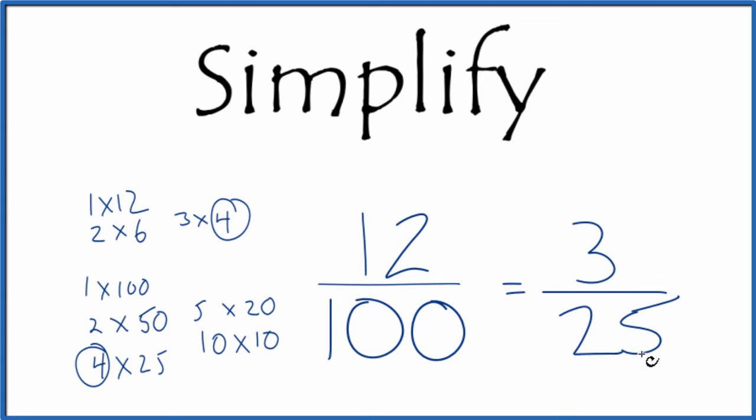We can't reduce this any further. We've reduced or simplified the fraction 12 over 100 down to 3 over 25. These are equivalent fractions. If you divide 3 by 25 or 12 by 100, you'll get the same answer. We've reduced 12 over 100 down to 3 over 25.